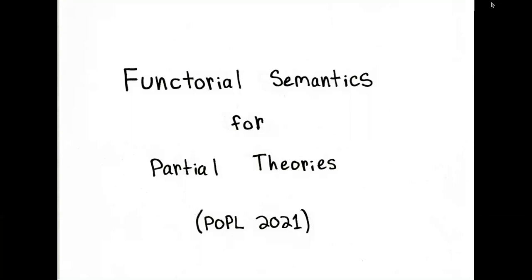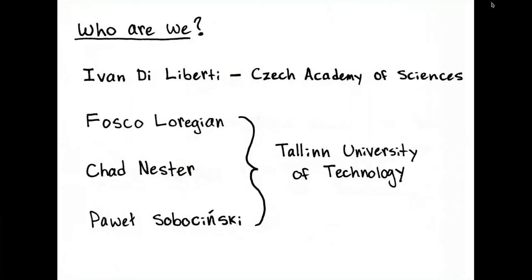Hello. If you're looking for the video for the POPL 2021 submission titled 'Functorial Semantics for Partial Theories,' you're in the right place. There are four authors: I am Chad Nester, a PhD student at Tallinn University of Technology, supervised by Paul Sobocinski, who is also a co-author. Fosco Loregian is also a co-author and a postdoc in our group, and we also worked with Ivan Di Liberti from the Czech Academy of Sciences.